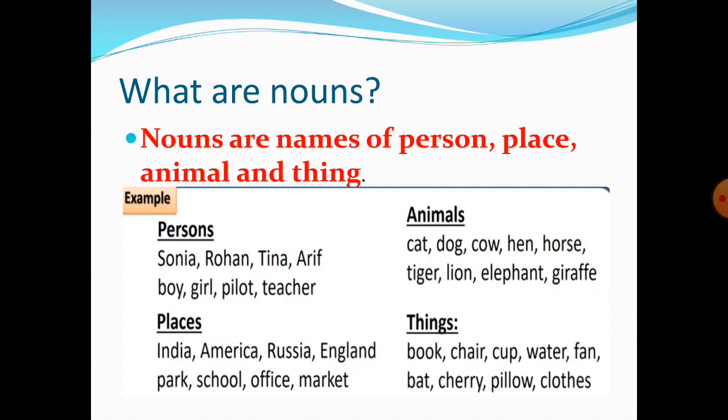Now children, let's see some examples of animals. Cat, dog, cow, horse, tiger, lion, elephant, giraffe — they are the names of animals.